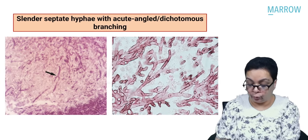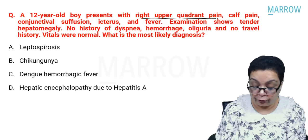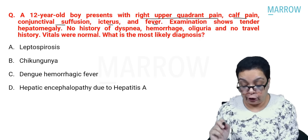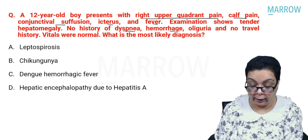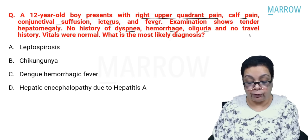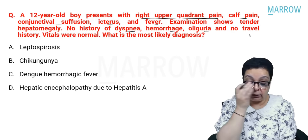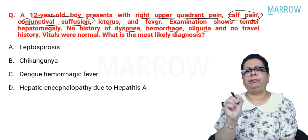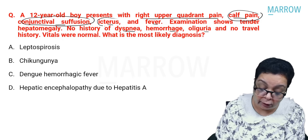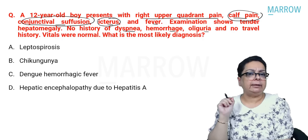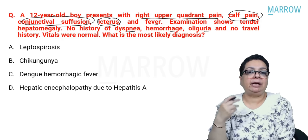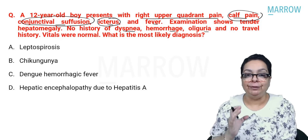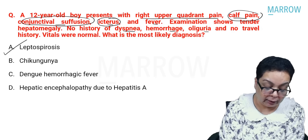A 12-year-old boy presents with right upper quadrant pain, calf pain, conjunctival suffusion, icterus, and fever with tender hepatomegaly. Conjunctival suffusion and calf pain are two characteristic symptoms of leptospirosis. Jaundice with conjunctival suffusion — think ictero-hemorrhagic fever or Weil's disease caused by Leptospira species. The answer is leptospirosis. Chikungunya, dengue hemorrhagic fever, and hepatitis A are ruled out based on the clinical features.